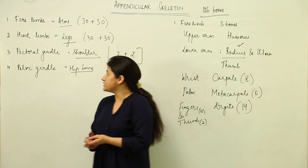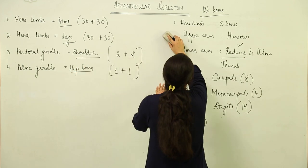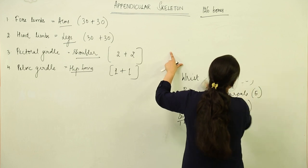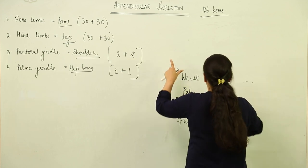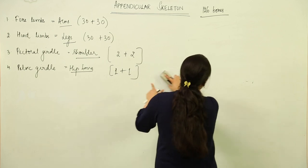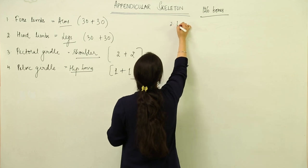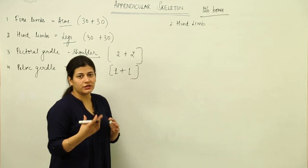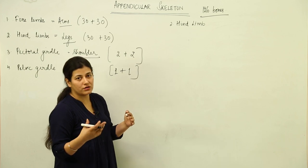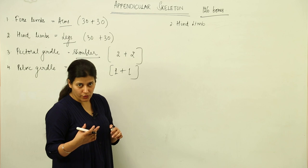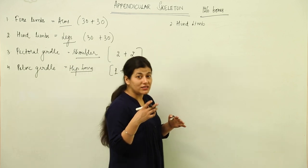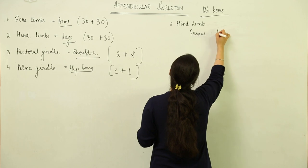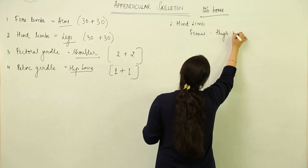Next is the hind limb. Again there are three long bones. The longest and heaviest bone in the human body — familiar from general knowledge — is the femur, also called the thigh bone.